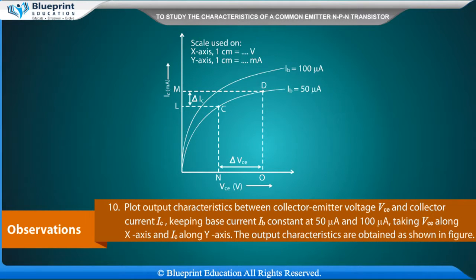Plot output characteristics between collector emitter voltage VCE and collector current IC, keeping base current IB constant at 50 micro-ampere and 100 micro-ampere, taking VCE along X-axis and IC along Y-axis.